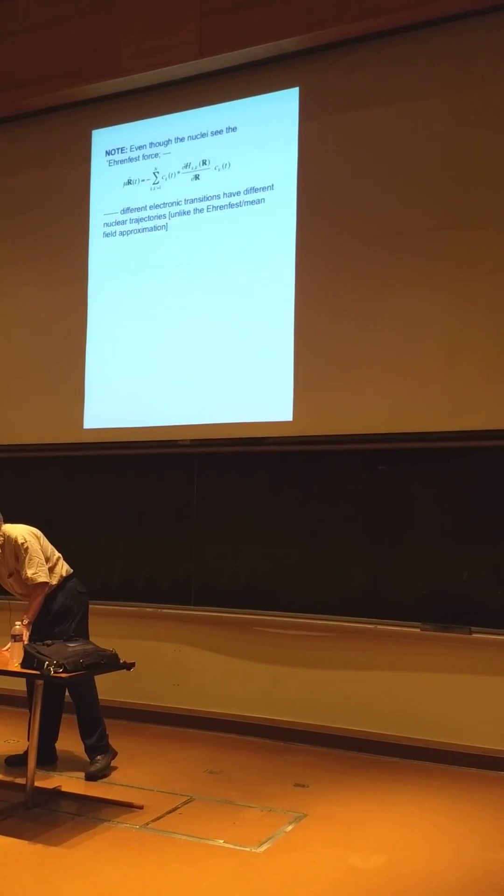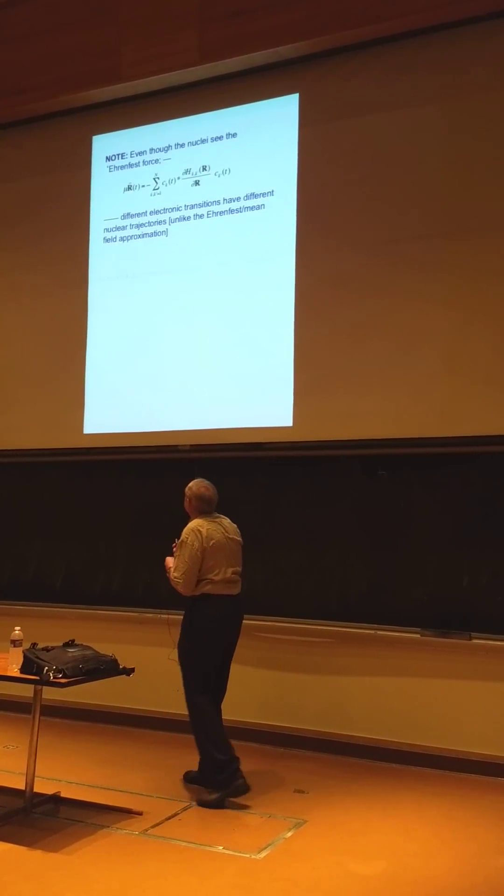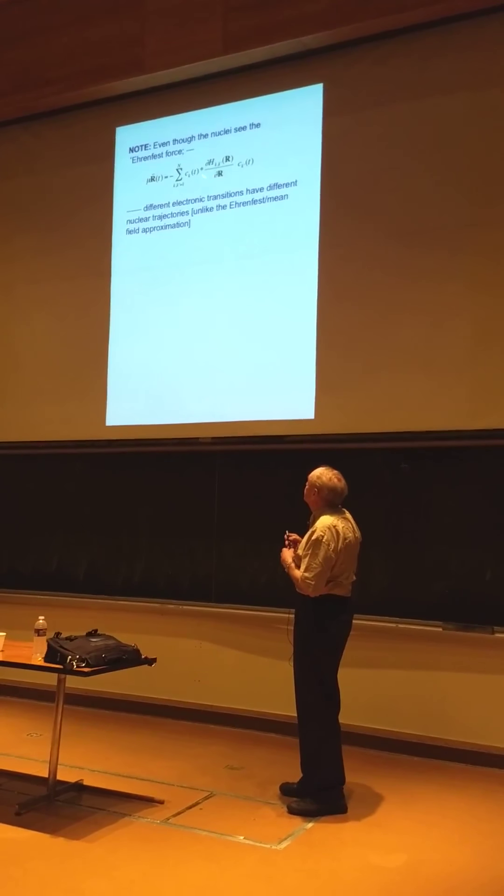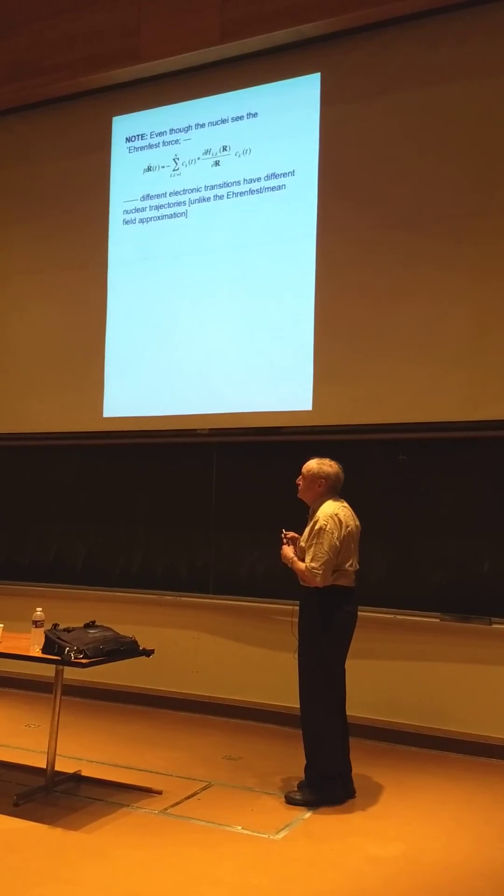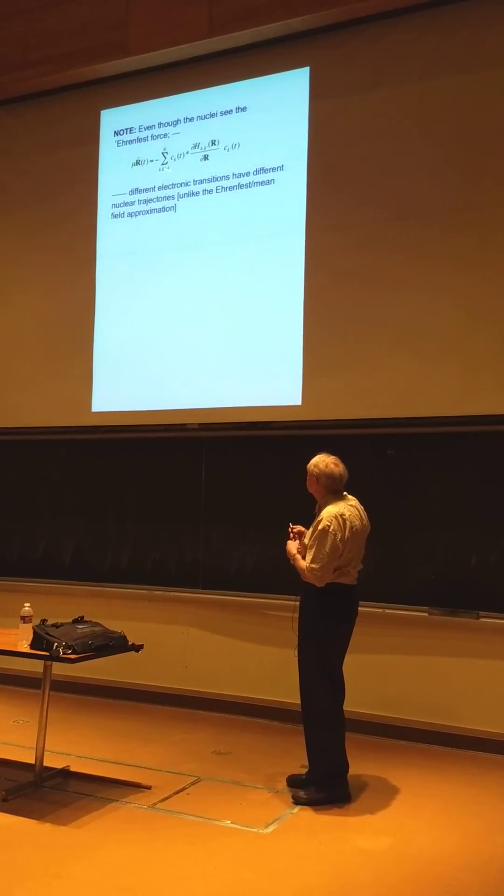Okay, so that's sort of the model. Let me mention this. If you take that classical Hamiltonian and look at the force on the nuclei, so r dot = dH/dp, p dot = -dH/dr, so that's μ r double dot.